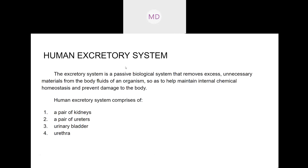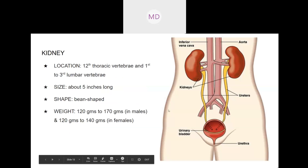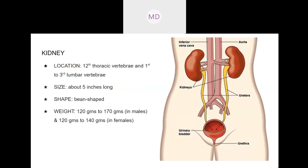The most important organ in the excretory system is the kidneys. Kidneys are the main organ responsible for excretion. The human excretory system is composed of a pair of kidneys — two kidneys — a pair of ureters, a urinary bladder, and a urethra. Looking at the diagram, these are the two kidneys, these are the two ureters, and this is the urinary bladder where urine is stored.